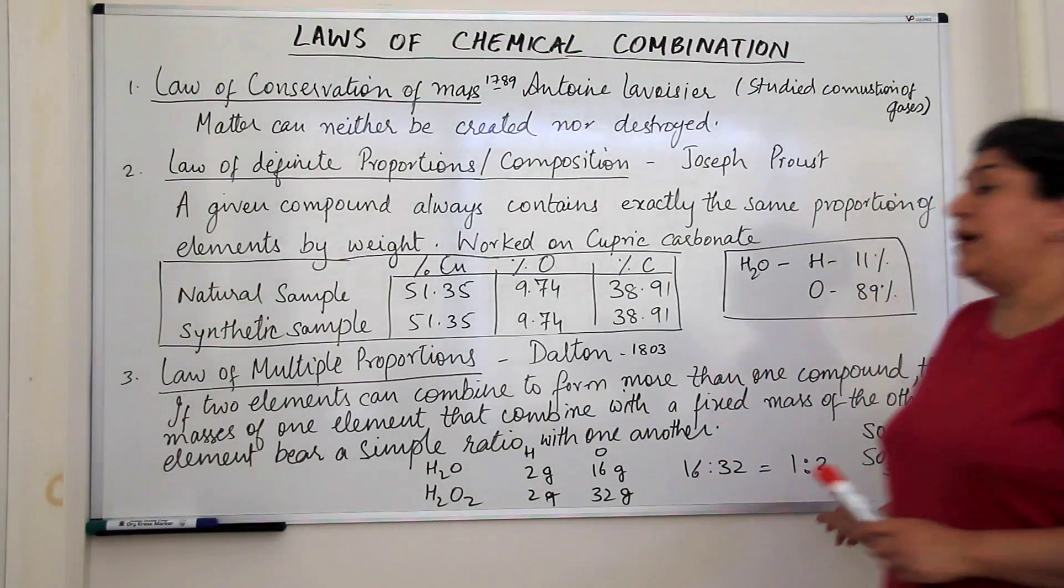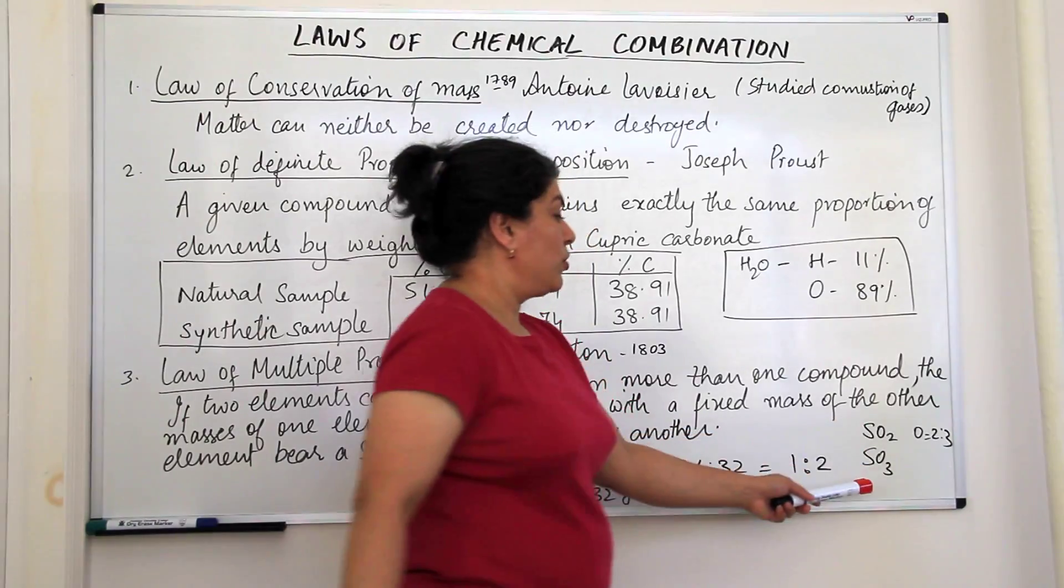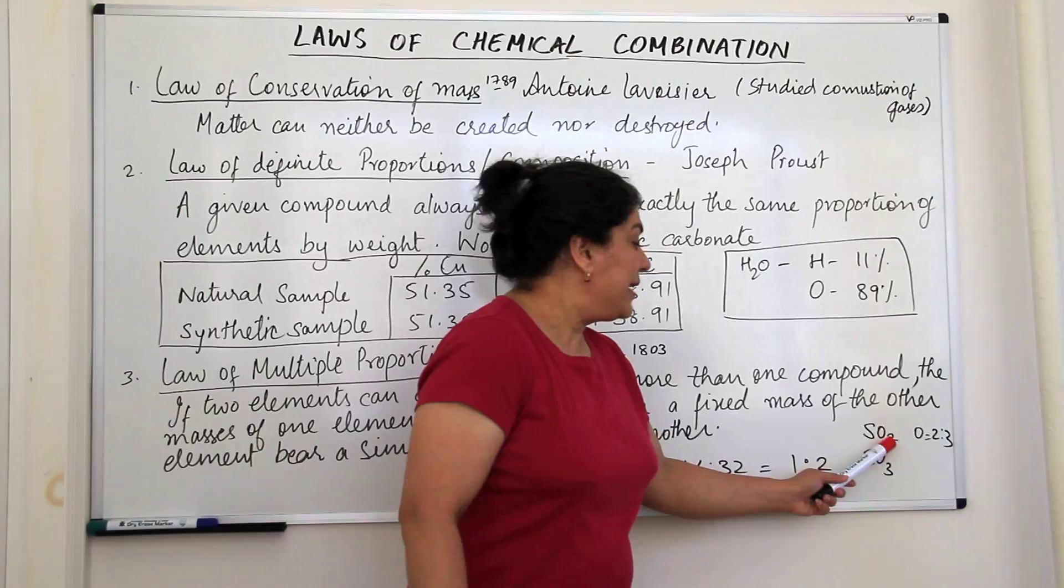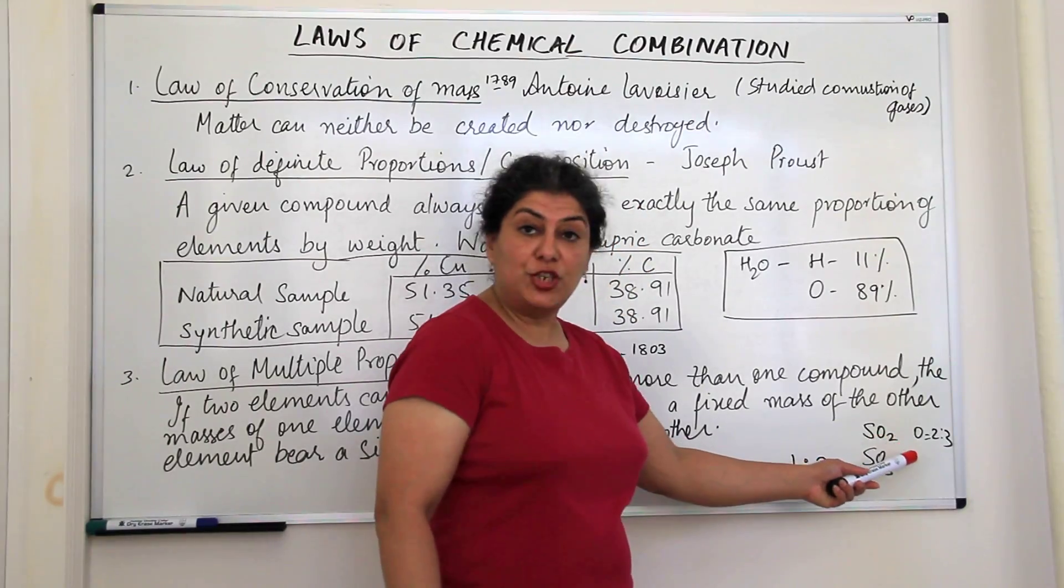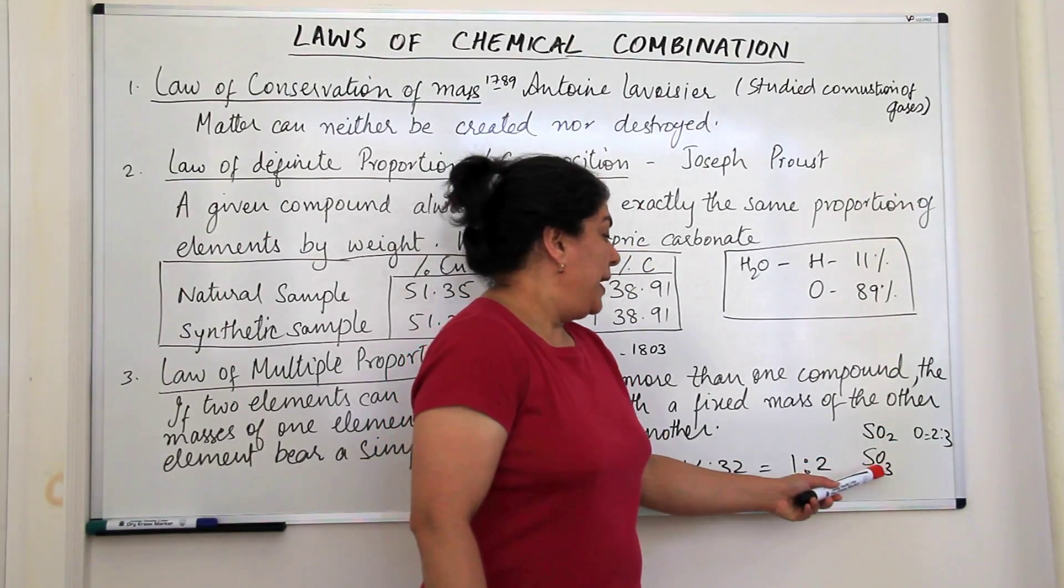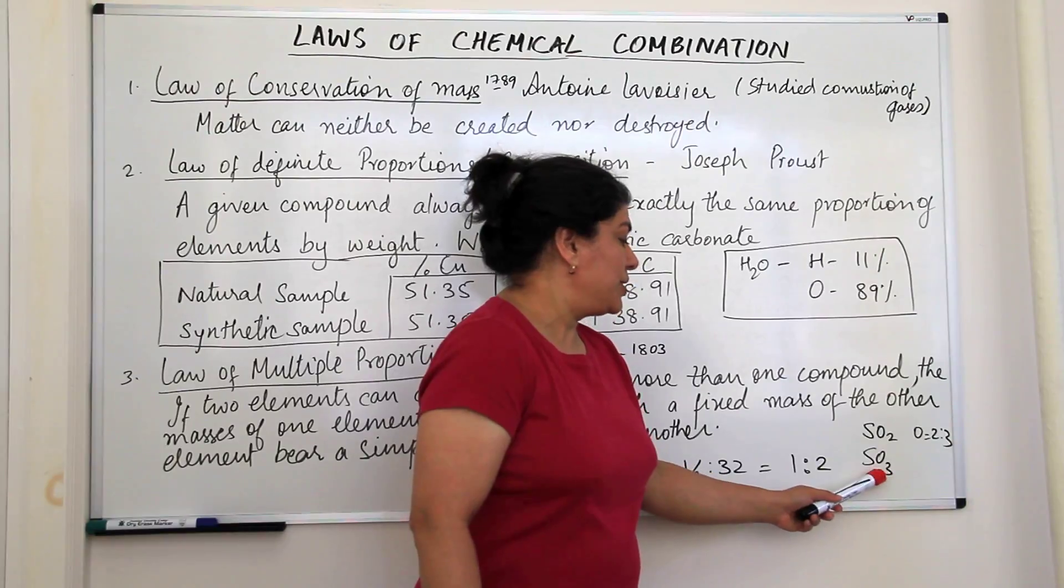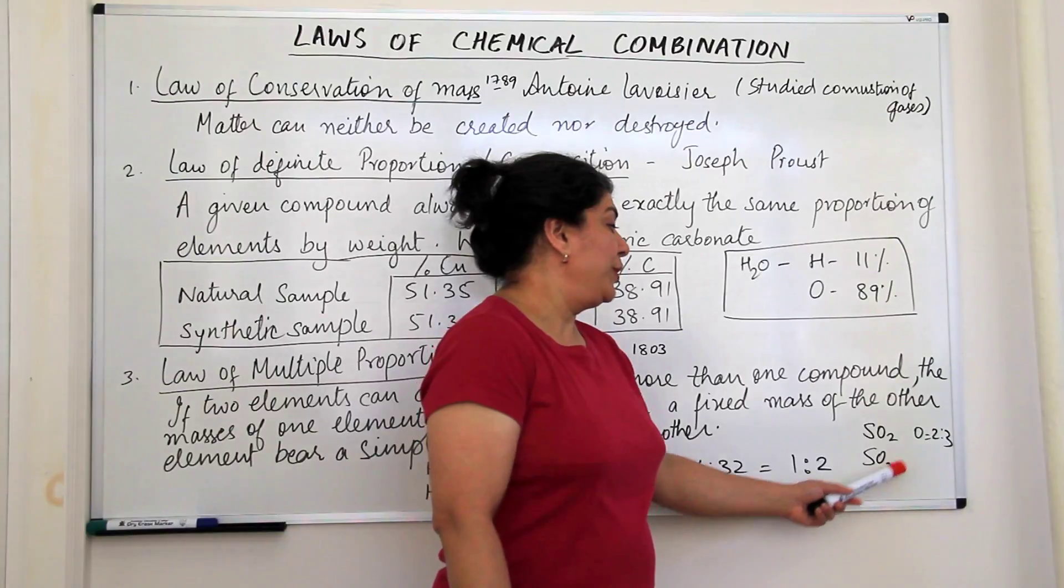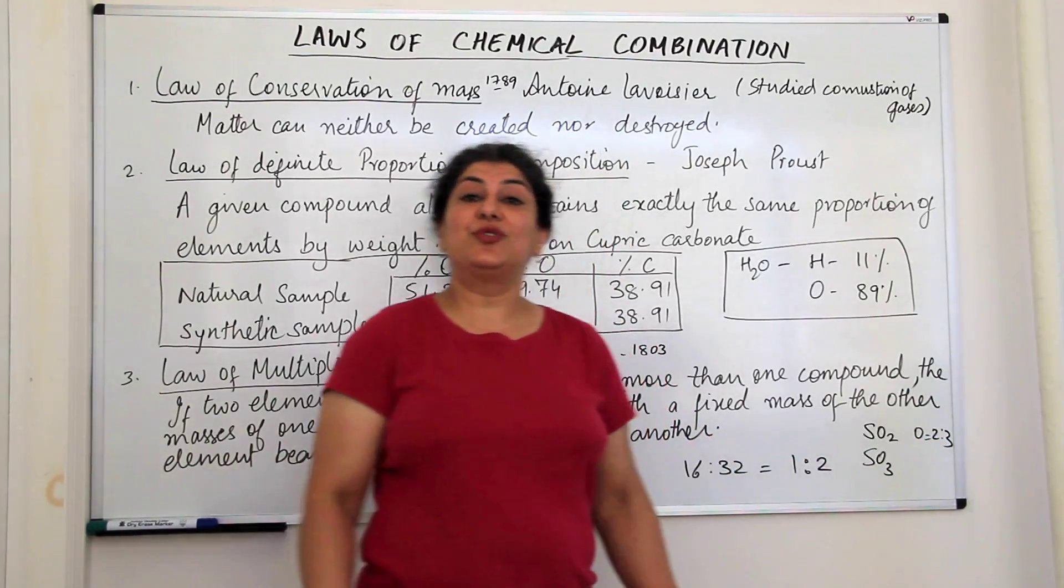Similarly, in this compound, sulphur dioxide and sulphur trioxide, sulphur is 32 grams, the molar mass of sulphur is 32 grams, there are two atoms of oxygen which means there should be 32 grams of oxygen and in sulphur trioxide, there should be 48 grams of oxygen. So 32 is to 48 would be a ratio of 2 is to 3.